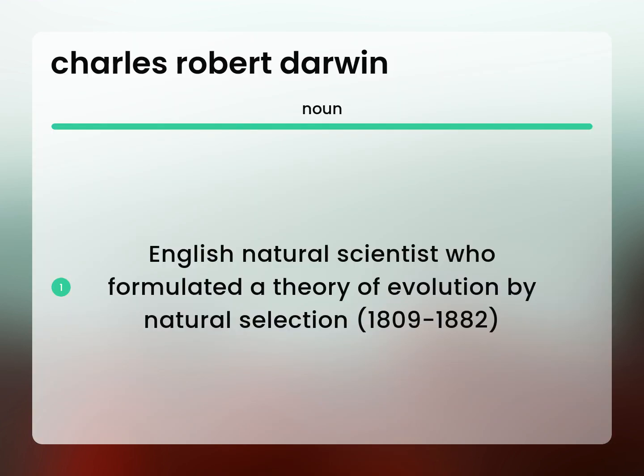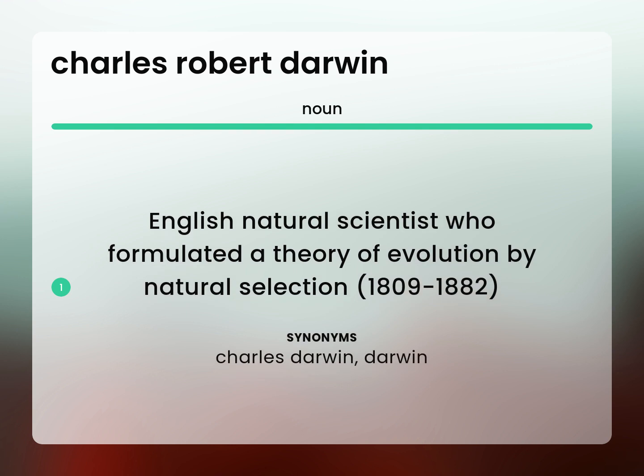English Natural Scientist who formulated a theory of evolution by natural selection, 1809-1882. Charles Darwin. Darwin.